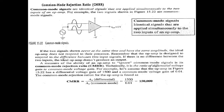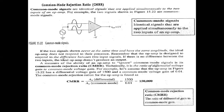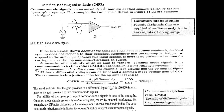CMRR represents how effectively the amplifier rejects common mode signals. Common mode signals are often undesired signals produced by interference, so a high CMRR indicates better ability to reject such noise.